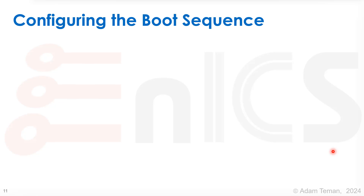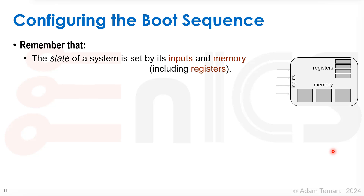So how do we configure this boot sequence? We have to remember what the state of a system is. The state of a system is basically the collection of all the registers we have, all the memory and SRAM, and the few inputs that we have. Those three things together make up the state of the system, along with the outputs they provide.